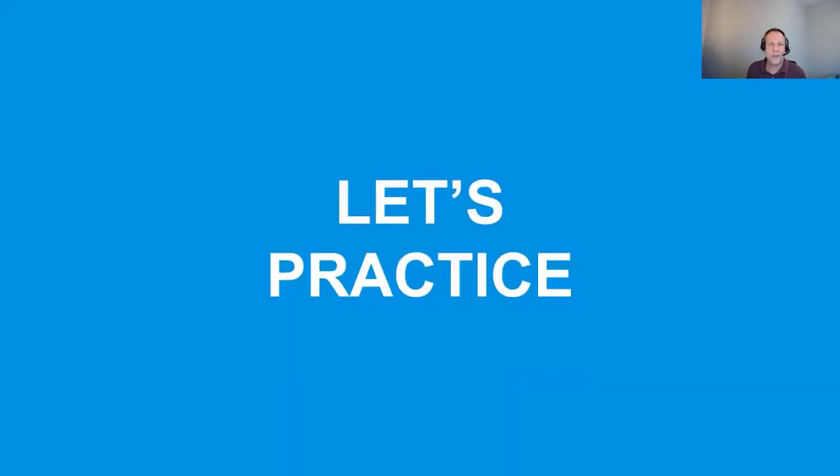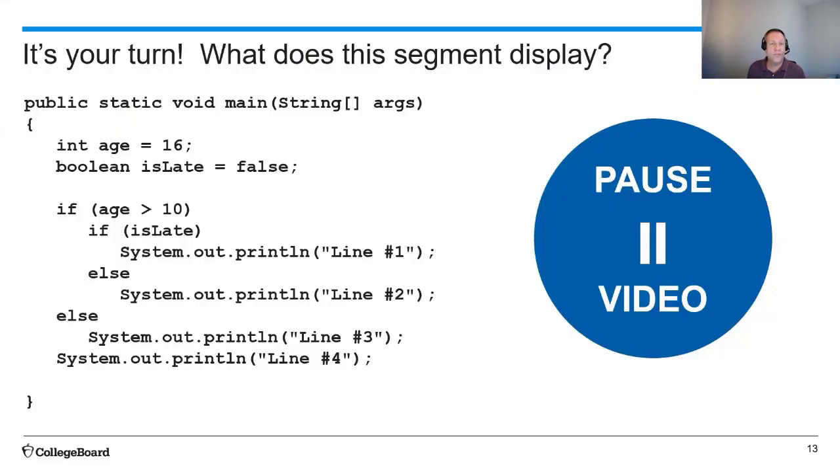So let's try some practice on your own here. I've got a code segment. I've got two variables, age and a boolean variable called isLate, and a series of if statements. Why don't we go ahead and pause the video here and evaluate what does this segment display? And when you're done, hit play again, and we'll go over the answer.